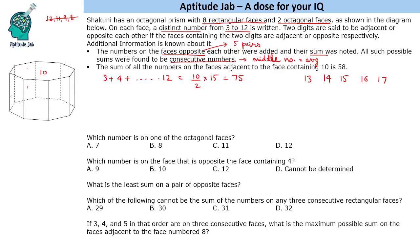Suppose 10 is on the octagonal face. The adjacent faces sum to 58, so together with 10, that's 68. The grand total is 75, so the other octagonal face contains 75 minus 68 = 7. So we have 10 and 7 as the pair summing to 17 on the two octagonal faces. One of the questions asks which number is on an octagonal face — the answer is 7.